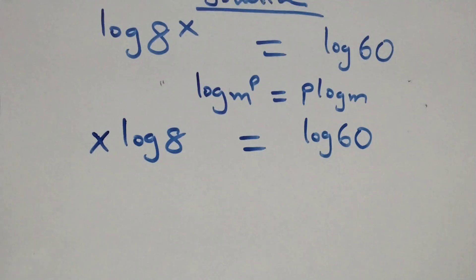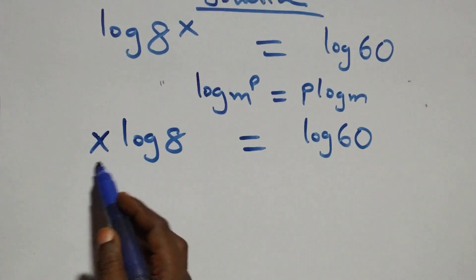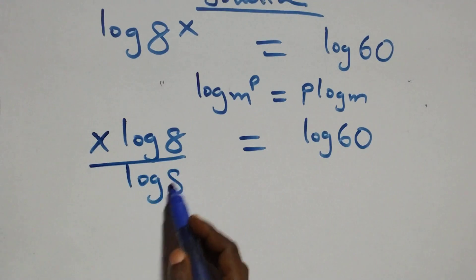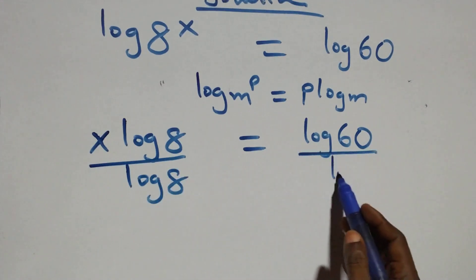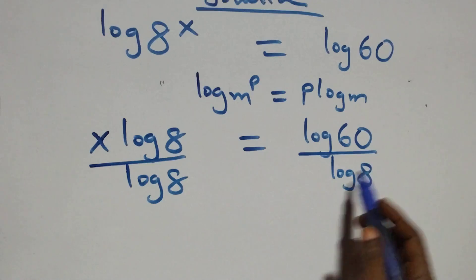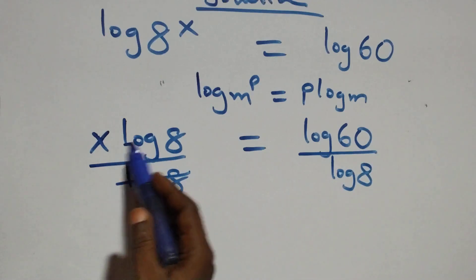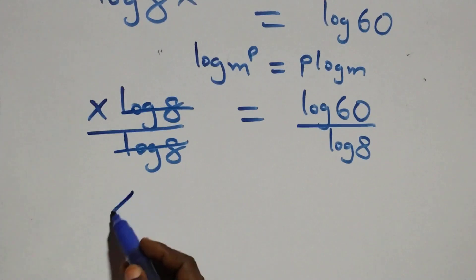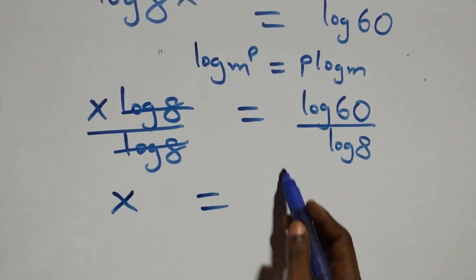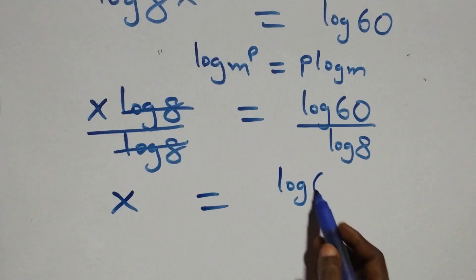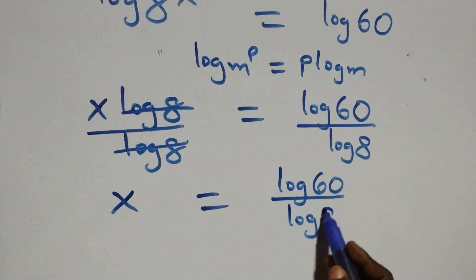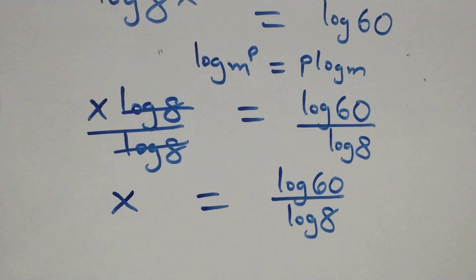Next, we divide both sides by log 8. Dividing this side by log 8 and also this side by log 8, the log 8 terms cancel each other, and we have x equals log 60 over log 8.